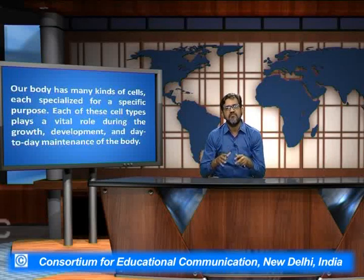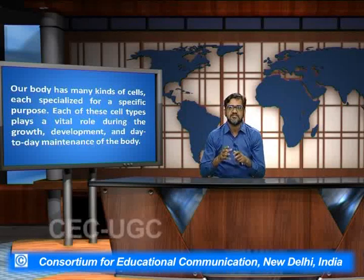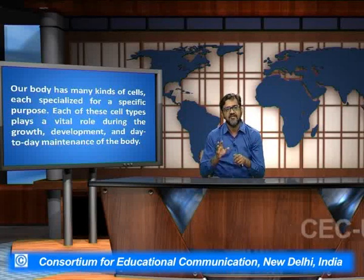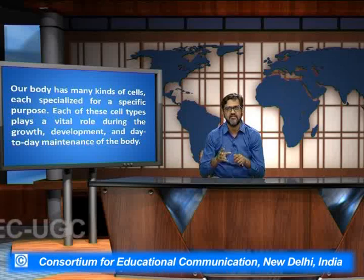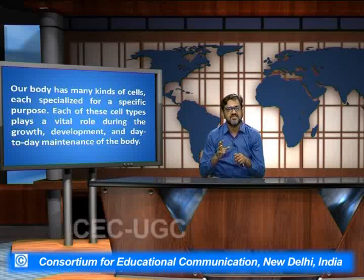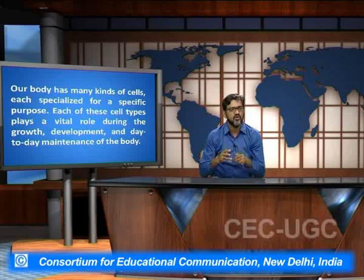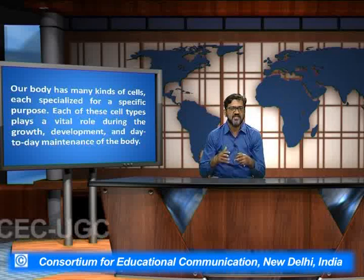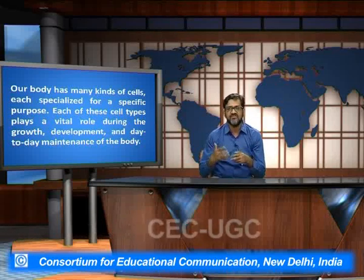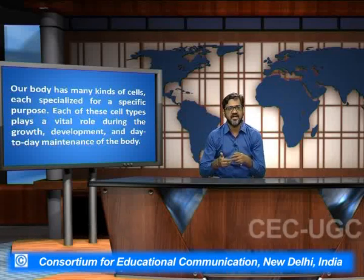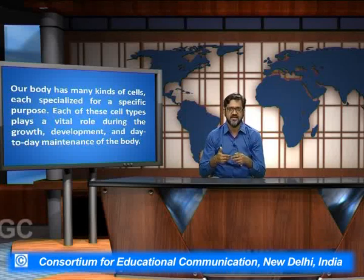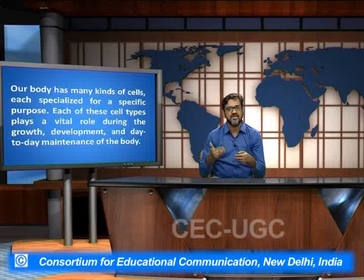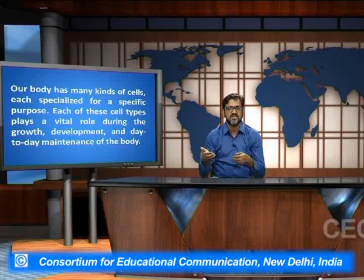Our body is made up of many kinds of cells and each of them is specialized for a specific function. Each cell type plays a vital role during the growth, development, and day-to-day maintenance of the body functioning. For example, cardiac cells are specialized to perform activities related to cardiac muscles and cardiac cycles, while neurons are specialized to perform functioning for the nervous system and signal transmissions.